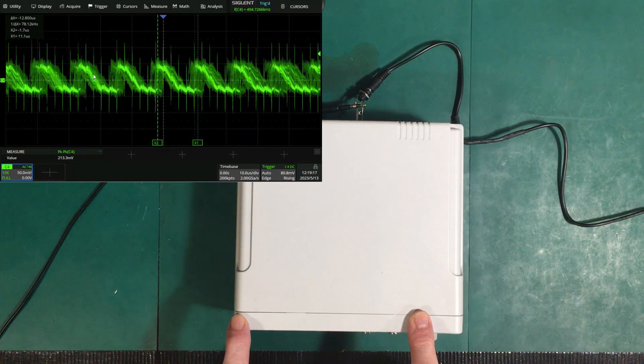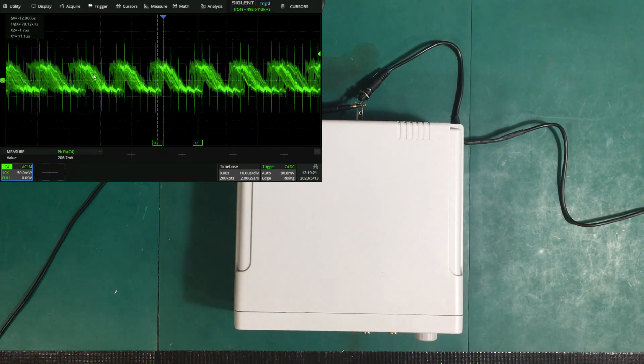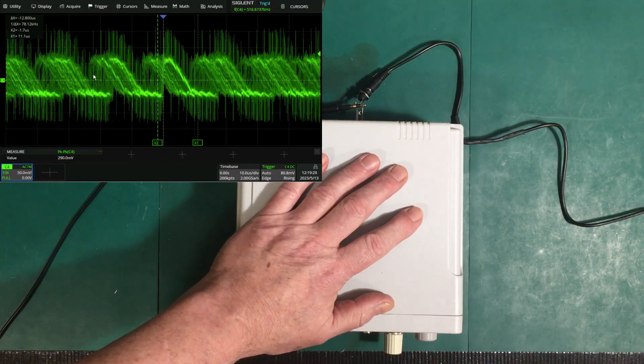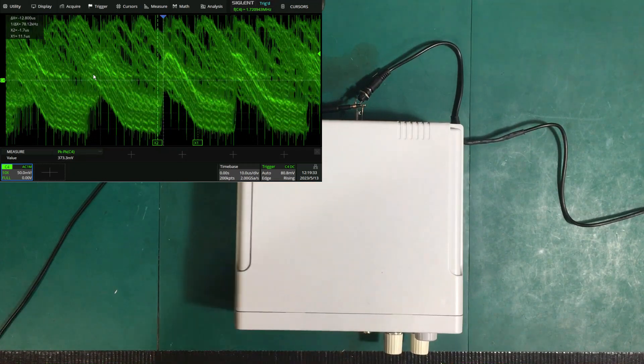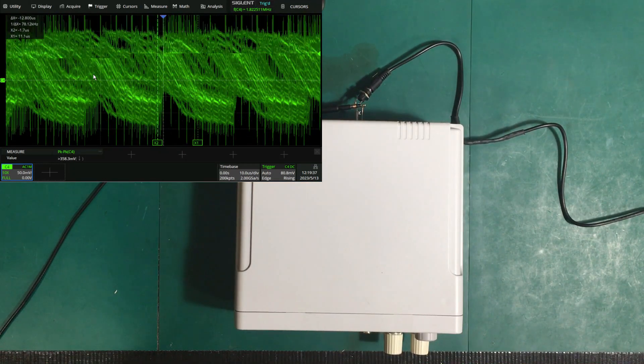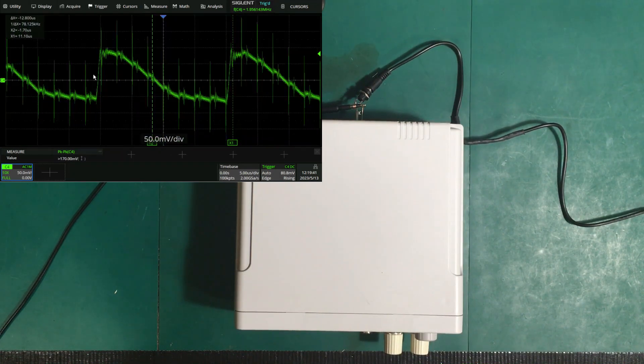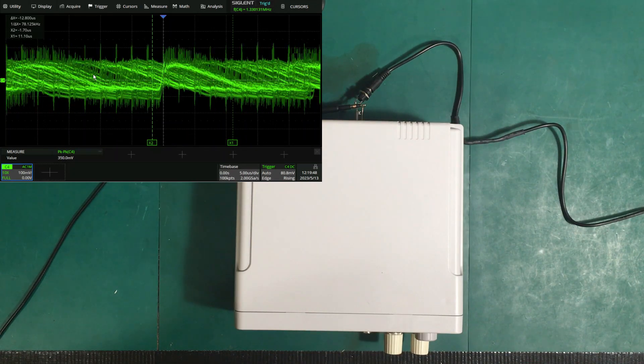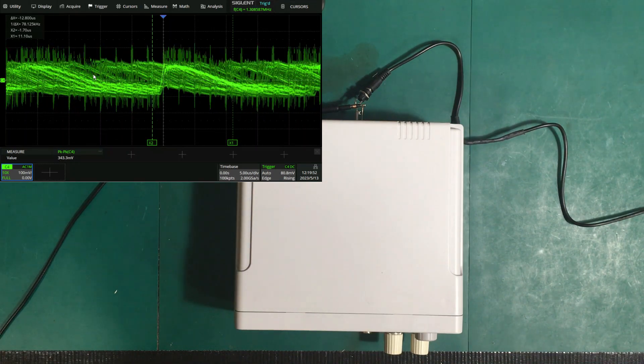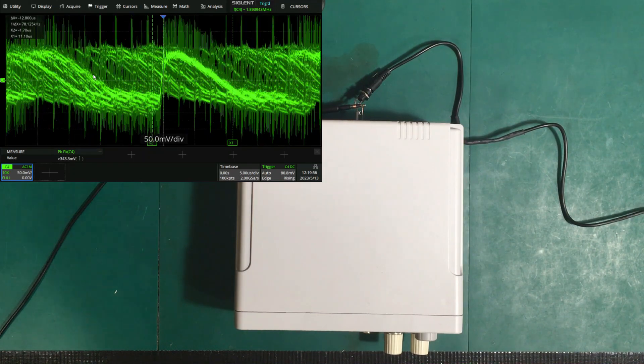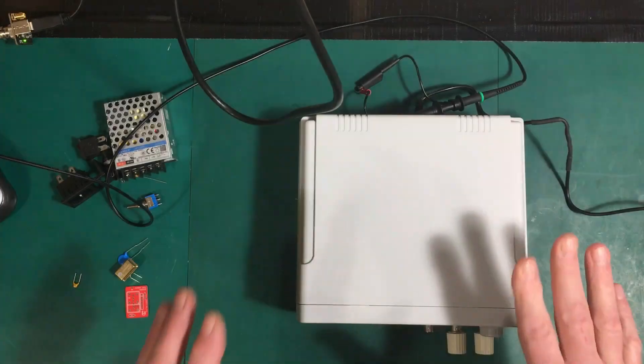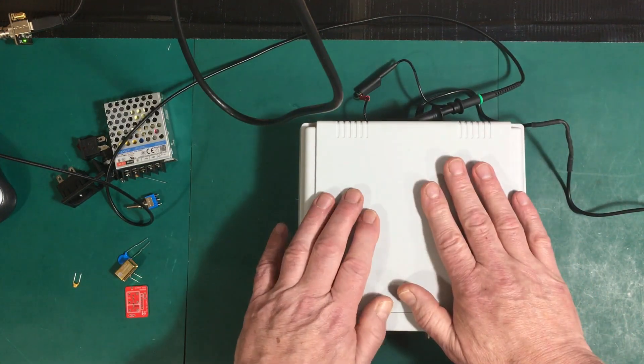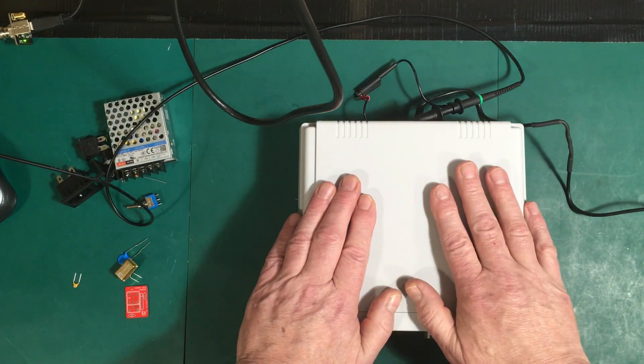I have this all set up to output 20 volts peak-to-peak on both channels with a square wave, which is about the maximum load you can put on. I'm going to connect these loads now to get it up to maximum load and see what the noise looks like. We're now up to 370 millivolts peak-to-peak. I'm really hoping we could do better than that with this new power supply.